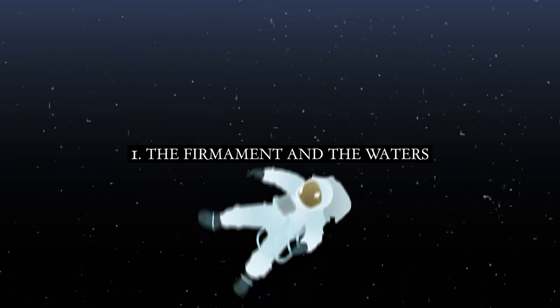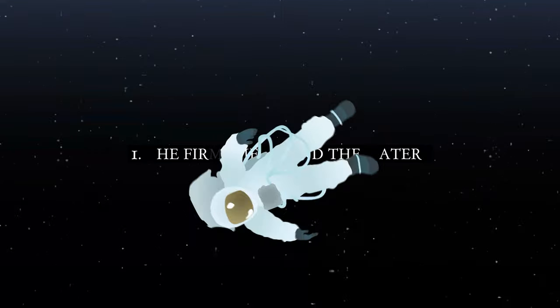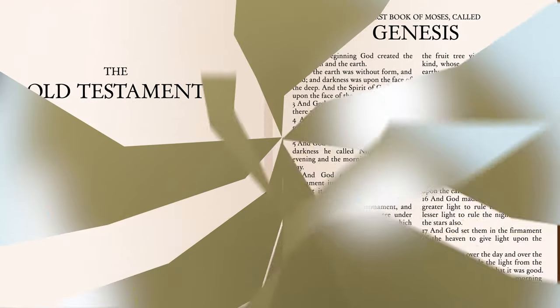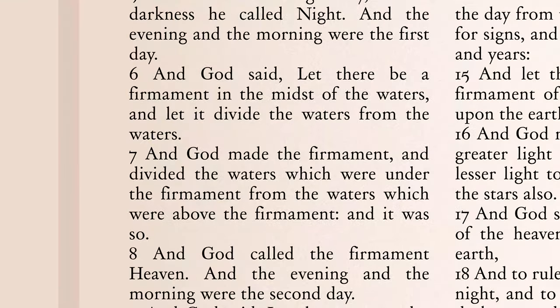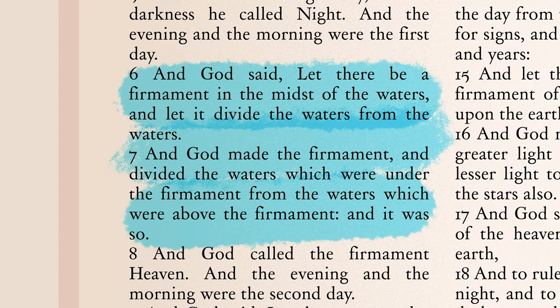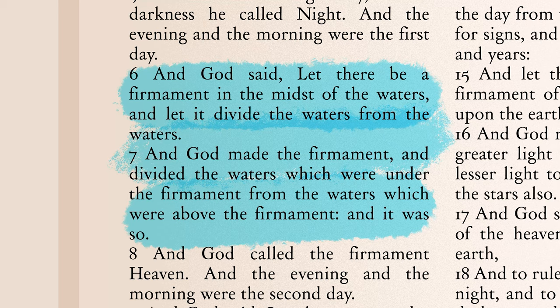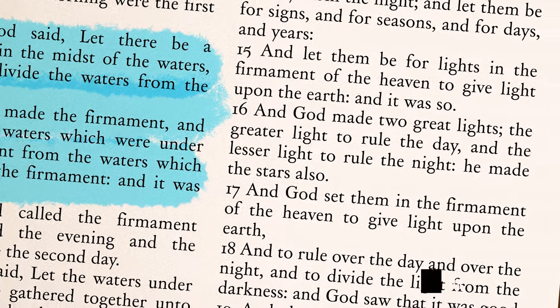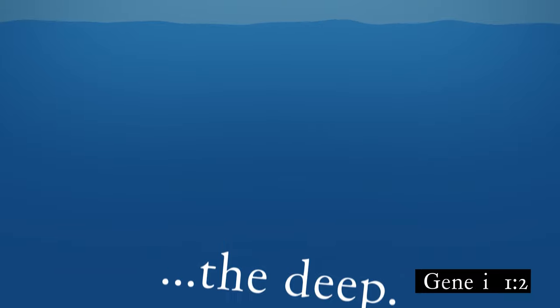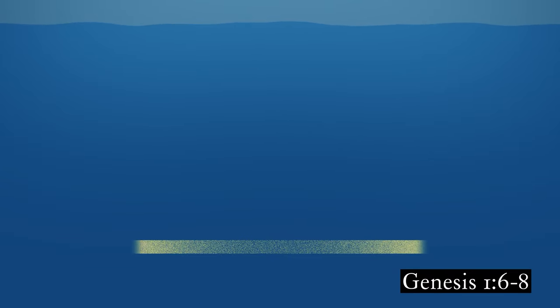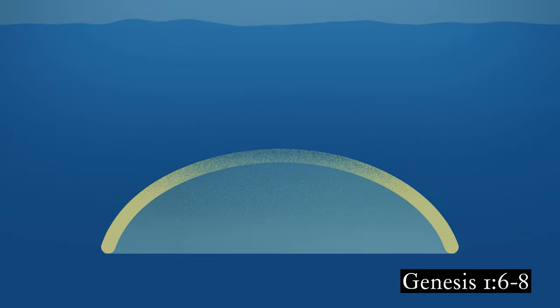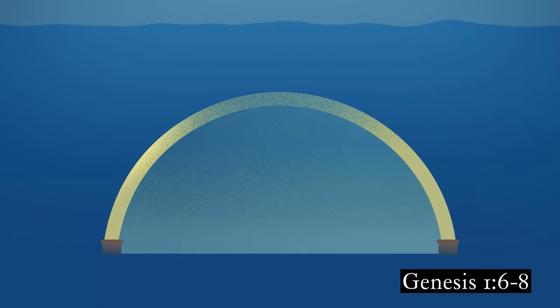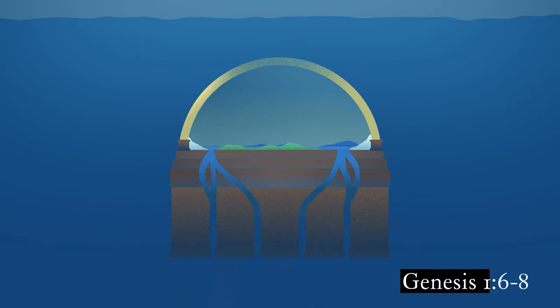1. The firmament and the waters. There is no outer space in the biblical model. The first chapter of Genesis and other scriptures describe our world as being encased within an immeasurable body of waters. These vast waters are referred to as the deep. On the second day of creation, God made the firmament to divide the waters which were below from the waters which were above, allowing for an inhabitable expanse in between.